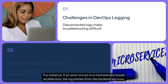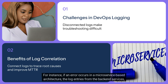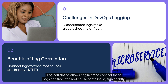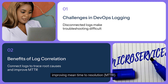Without proper correlation, DevOps engineers are left with disconnected logs from different systems, making troubleshooting time-consuming and error-prone. For instance, if an error occurs in a microservice-based architecture, log entries from backend services, APIs, databases, and client-side applications may be spread across different platforms. Log correlation allows engineers to connect these logs and trace the root cause, significantly improving mean time to resolution (MTTR).